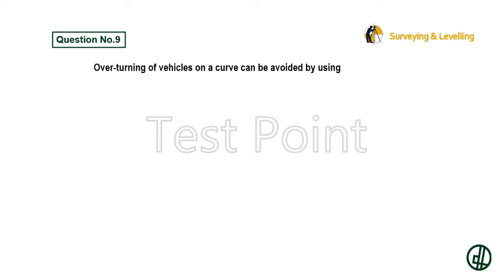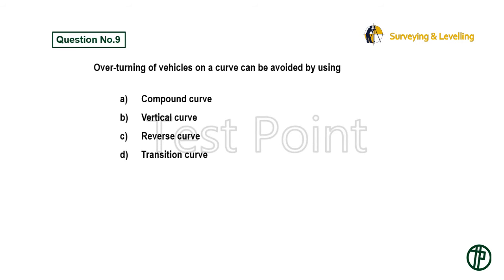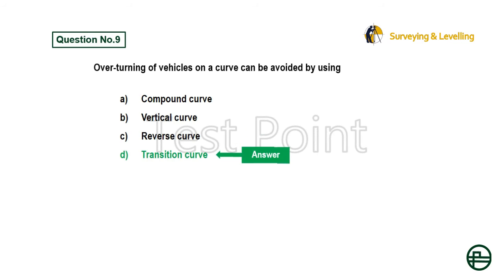Question 9: Overturning of vehicles on a curve can be avoided by using — Option A: Compound curve. Option B: Vertical curve. Option C: Reverse curve. Option D: Transition curve. Answer is Option D: Transition curve.